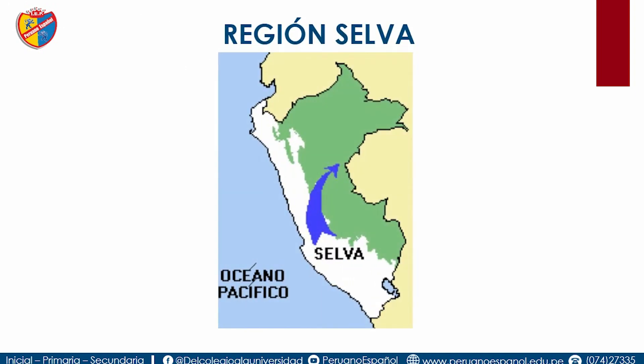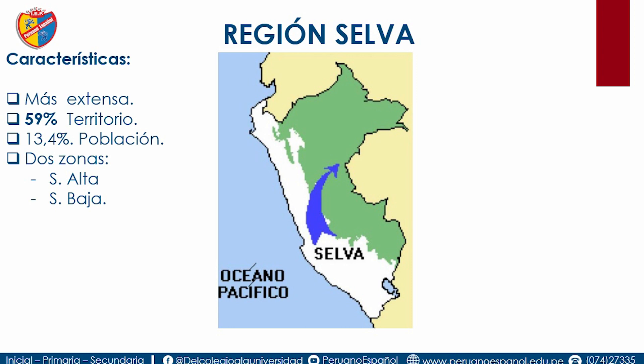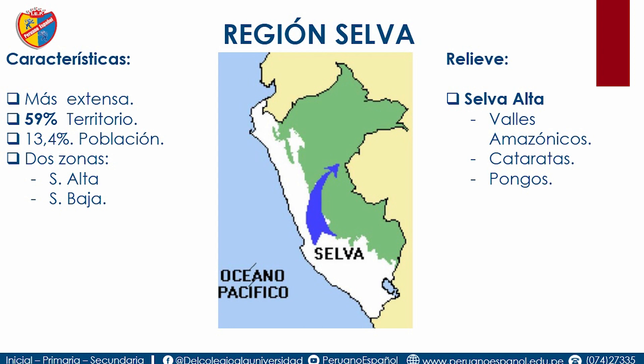Pasamos a la región selva. Es la más extensa, ocupa el 59% del territorio, pero en población solo el 13.4%. Tiene dos zonas: selva alta y selva baja. En la selva alta tenemos valles amazónicos como San Ignacio, Jaén y Bagua. La catarata más conocida turísticamente son las cataratas de Gocta. Tenemos pongos que generan centrales hidroeléctricas: el pongo del Mantaro, el pongo del Manceriche y el pongo del Padre Abad.